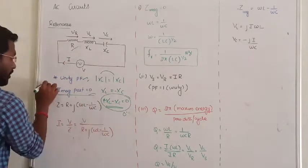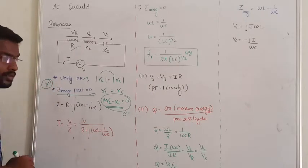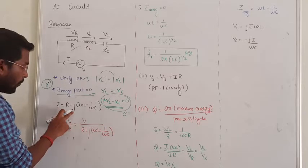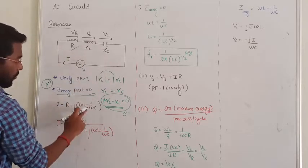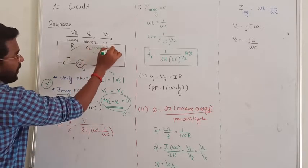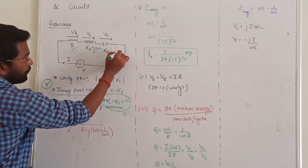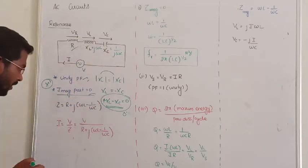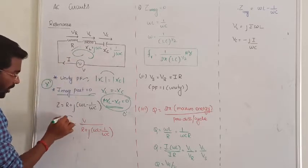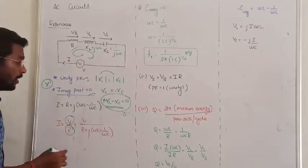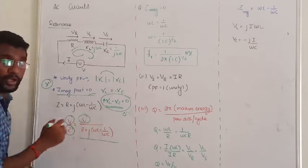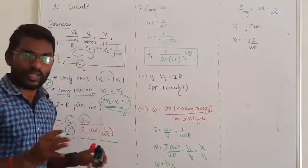Then the imaginary term is completely going to be zero. That is the most important condition. We are calculating the total impedance: Z = R + j(ωL − 1/ωC), that is the reactance offered by the inductor and the capacitors. The total current flow I is equal to the total voltage V divided by the total impedance R + j(ωL − 1/ωC).